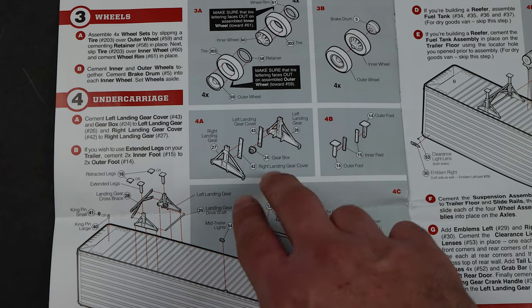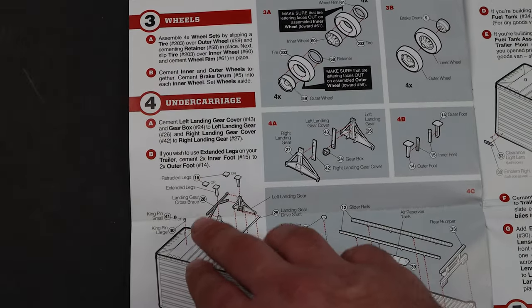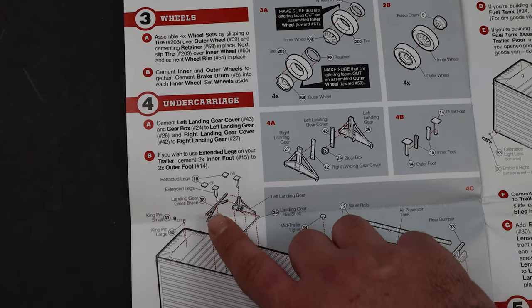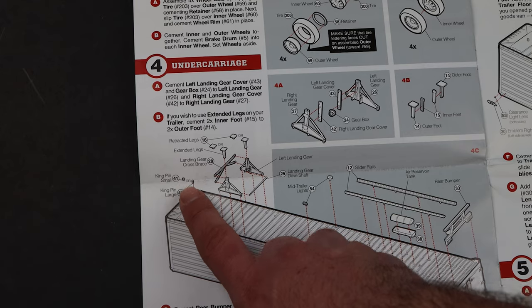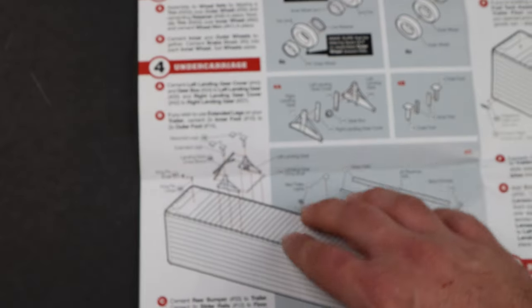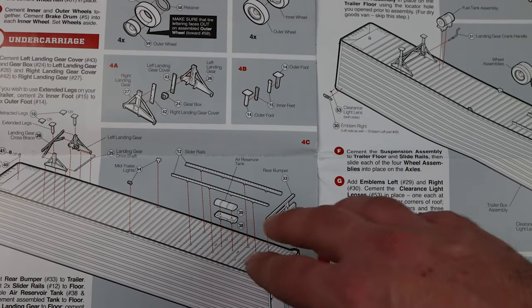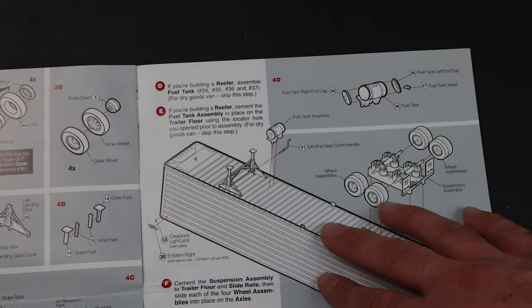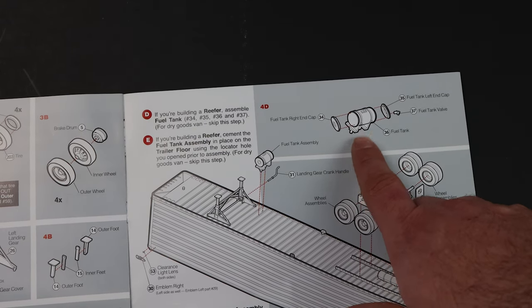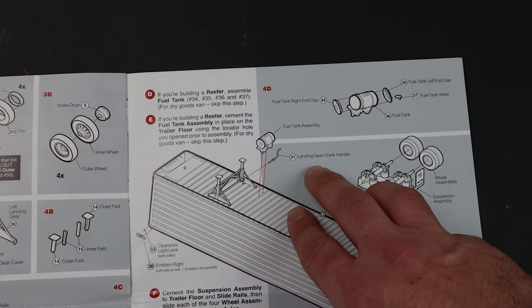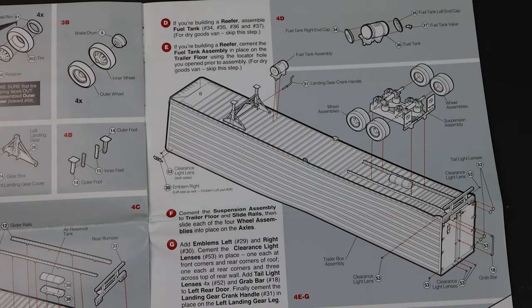Step four turns to the undercarriage, so building up the landing gear, as well as adding the foot before attaching that to the bottom of the trailer. And you have the option of retracted or extended legs on this one. A little bit of bracing. And again, there's two options for the kingpin. There's a small one and a large one. It looks like the only difference is how tall it actually is. Putting on some trailer lights, attaching the slider rails, as well as the air reservoir tank, and the rear bumper. From there, you build up the fuel tank. Again, it's an optional piece if you're going to do that, so it looks like it's a four or five-piece assembly that gets added. You add the landing gear crank handle, as well as some clearance lights, and they do have some emblems that attach on the front left and right of the trailer.